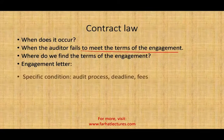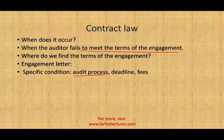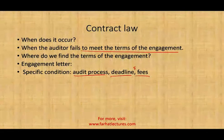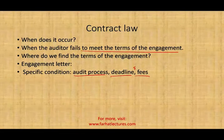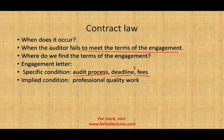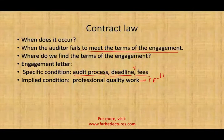What are some of the specific conditions? The audit process — how are you going to audit the company — deadlines, and fees. Those are things that could be specifically identified in the contract. Also, what's implied in the contract is that you're going to have to do professional quality work. You don't have to spell this out; it's implied that you're going to be doing professional quality work.